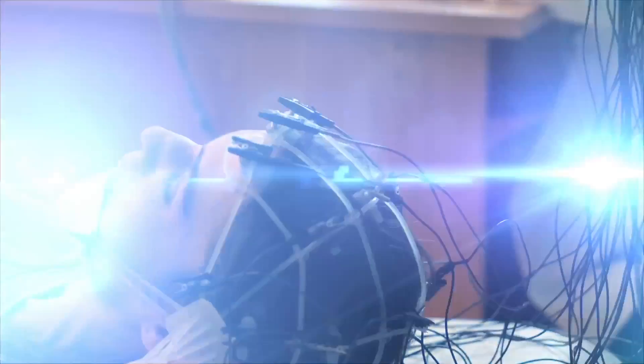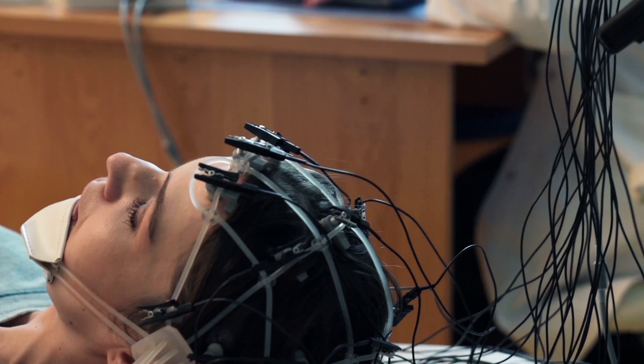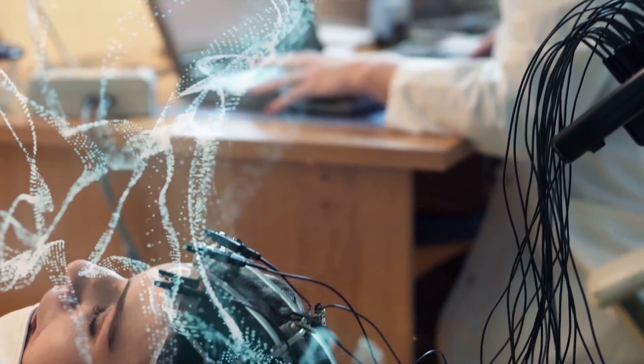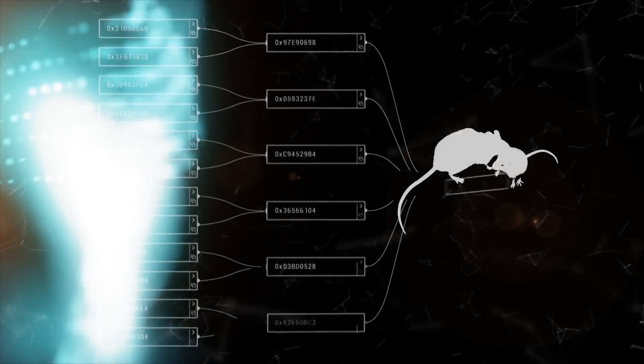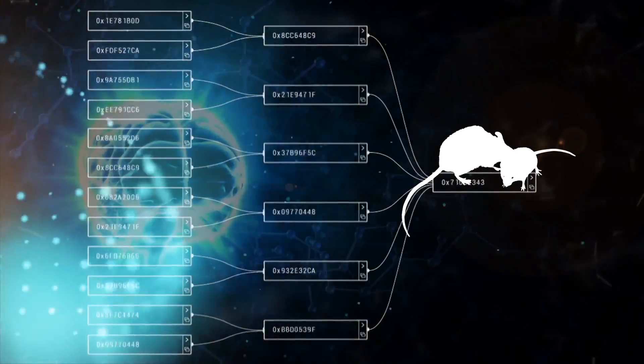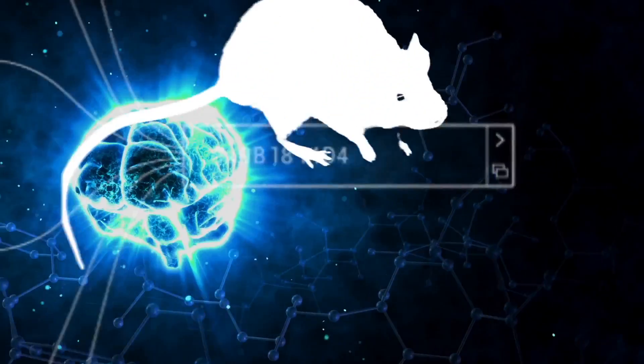Scientists at Harvard University set up an experiment where a human wearing an EEG cap would think, and those thoughts would be picked up by the cap, transmitted into signals that would be sent to an ultrasonic emitter that stimulated a rat's brain and caused its tail to move in a certain direction.